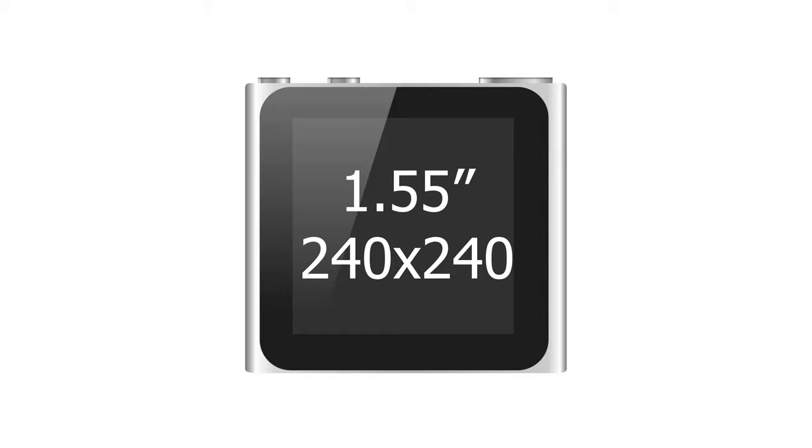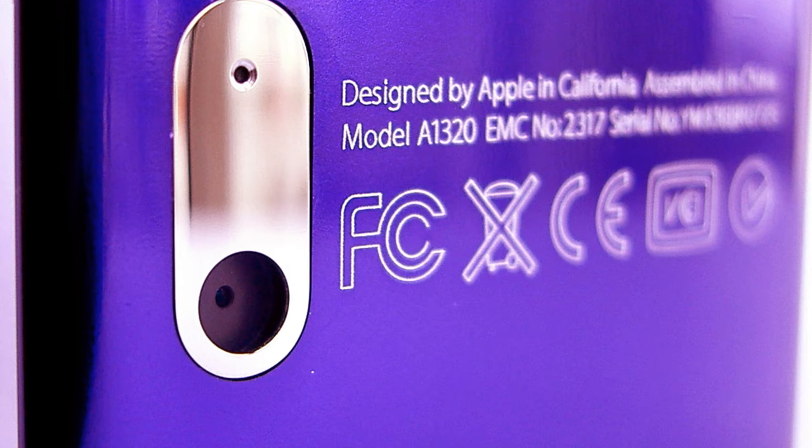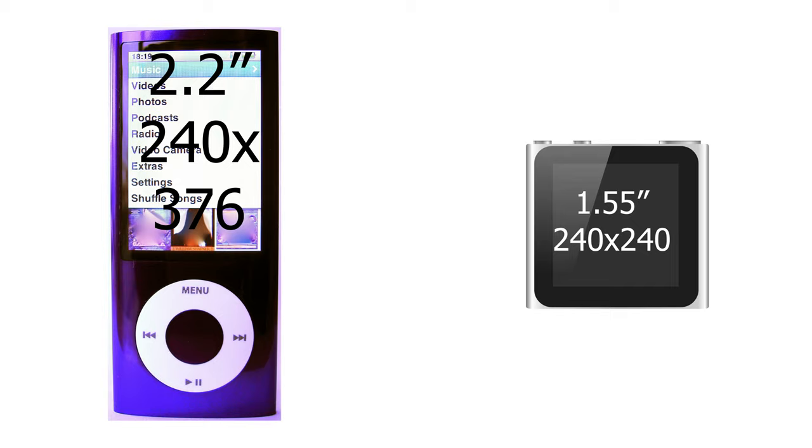For the new iPod Nano, Apple made it look more like the iPod Shuffle, except with a touchscreen. This was 1.55 inches and square at a resolution of 240x240. It was complete with the clip from the iPod Shuffle, although they removed some features introduced with the 5th generation — they removed the video camera, the speaker, and the ability to play video due to the smaller display.